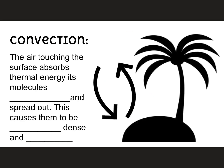The third step in how Earth's atmosphere is heated is through the process of convection. The air touching the Earth's surface absorbs thermal energy and its molecules speed up and spread out. This causes them to be less dense and rise. Let's take a look at what that might look like — here the Earth's atmosphere is being heated.